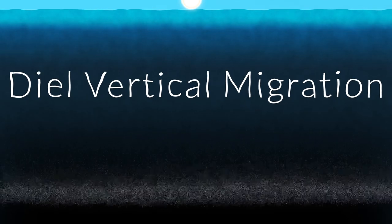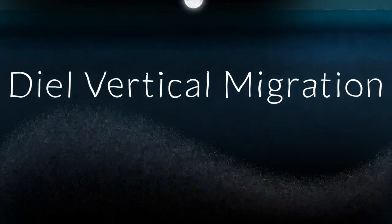This phenomenon is called diel vertical migration and includes the movement of billions of creatures of many species migrating up and down in the ocean's twilight zone, stirring the ocean and avoiding predators.